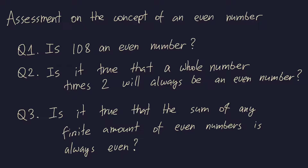Of course, if a student understands what it means to have an even number — in other words, a number that is divisible by 2 — then clearly a whole number times 2 will be divisible by 2, so the question can be very easily answered. The second question is a bit more reliable than the first question after the student has already seen the first question in a previous assessment or as one of the exercises in the course.